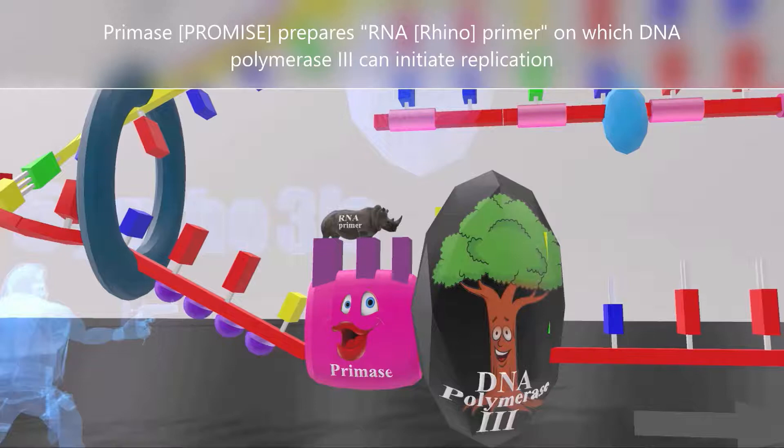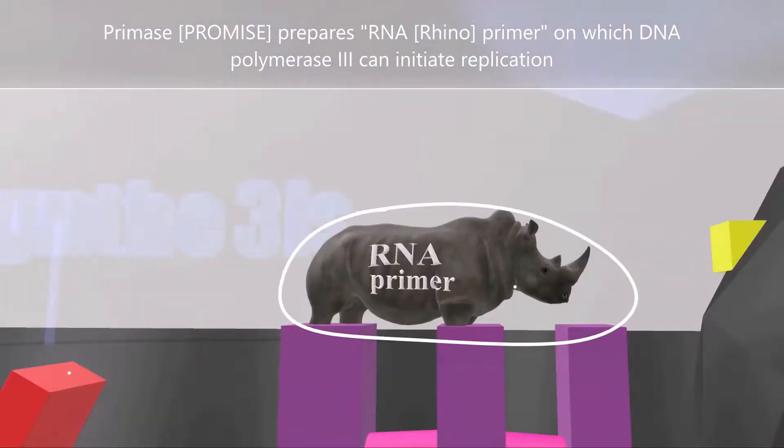Without Primase, DNA polymerase III can't do anything. We're reminded of this RNA primer by this rhino. Rhino for RNA, or the RNA primer for DNA polymerase III to initiate replication.